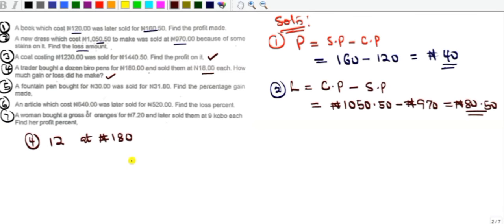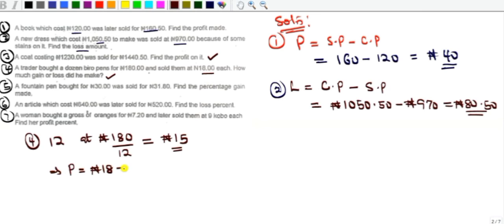Dividing 118 by 12 gives a cost price of about 15 naira per pen. He sells each at 18 naira, so the selling price exceeds the cost price. Profit per pen = 18 − 15 = 3 naira. Multiplying by 12 pens gives a total profit of 36 naira — so this is a gain.